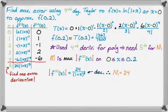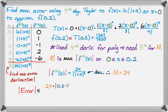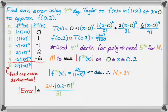The absolute value of the error is less than or equal to M — so 24 — times the absolute value of c minus a, which is 0.2 minus 0, raised to the n plus first power. Since we used the fifth derivative to find M, the exponent is 5, all over 5 factorial. Using the calculator, that gives 1 over 15,625, which is a very small number — so this is a very accurate estimate.